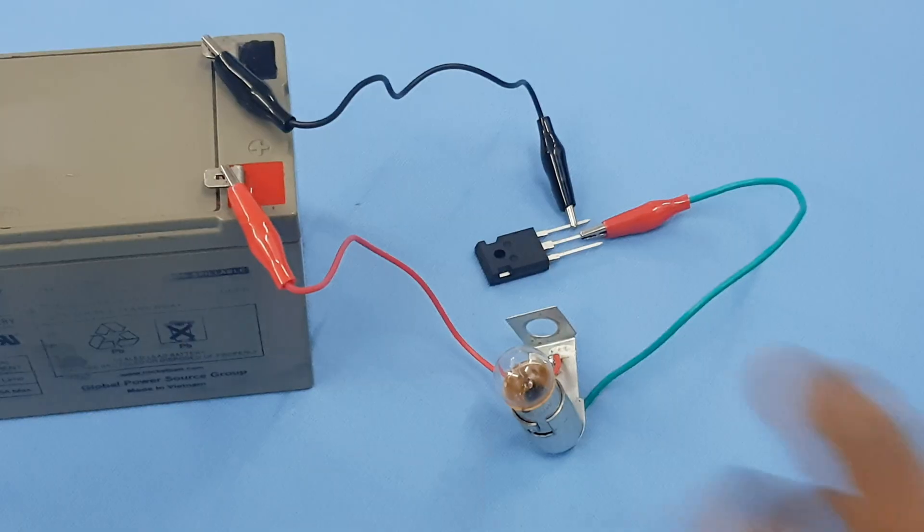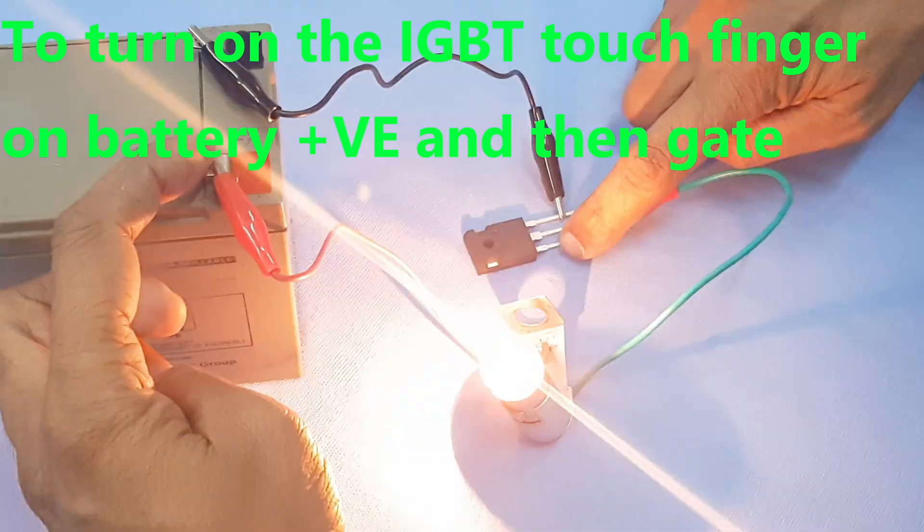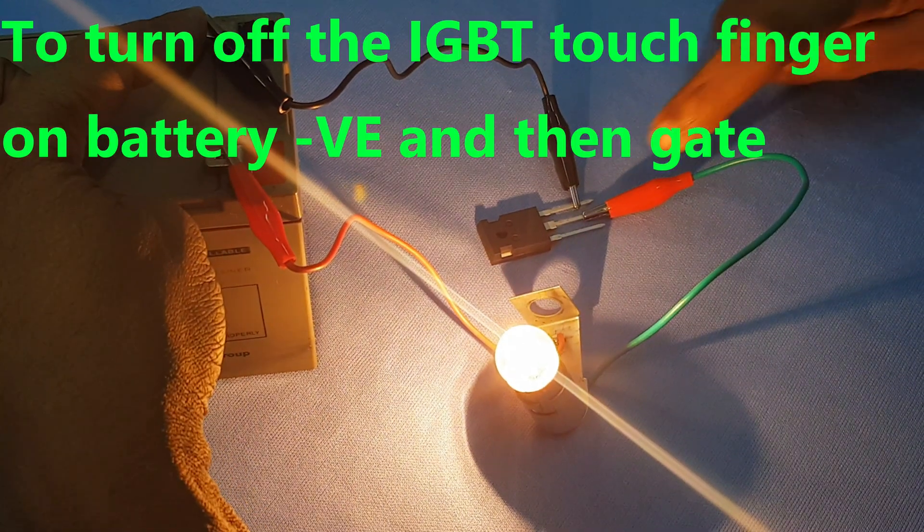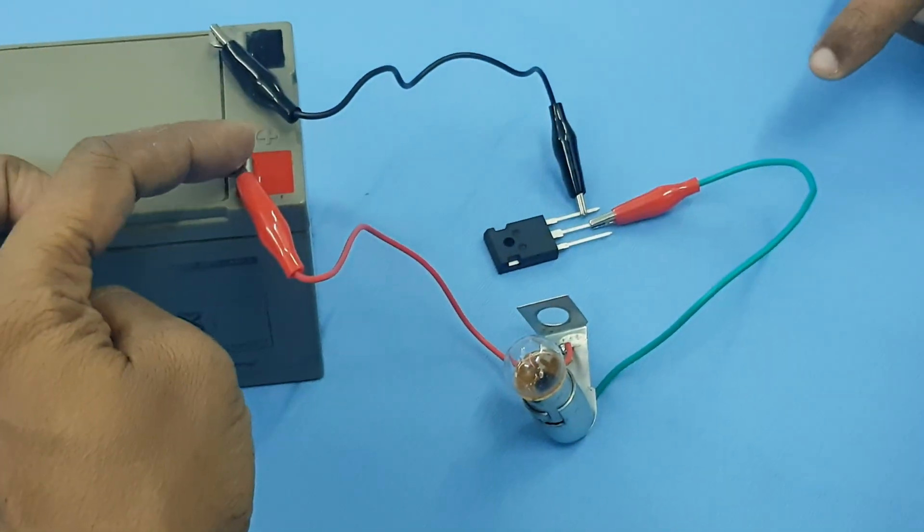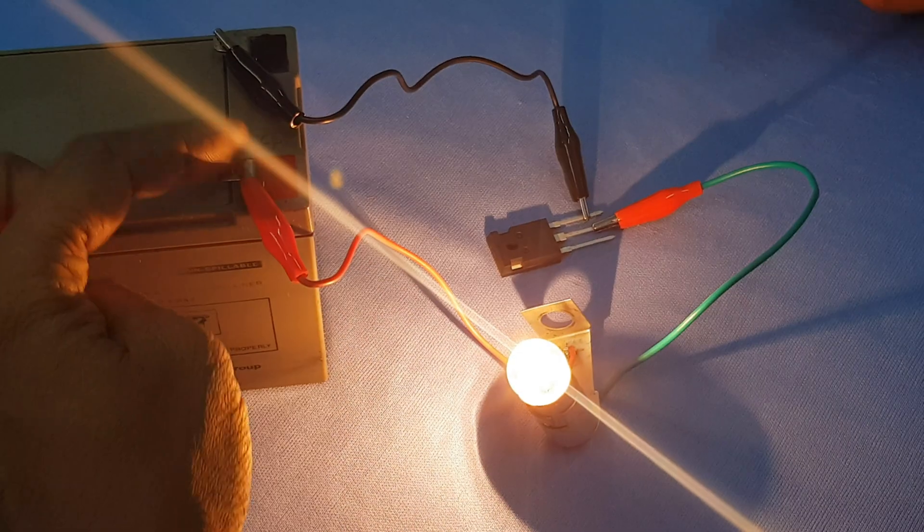To turn on the IGBT, touch finger on battery positive and then gate. IGBT is turned off by touching finger on battery negative and then gate.